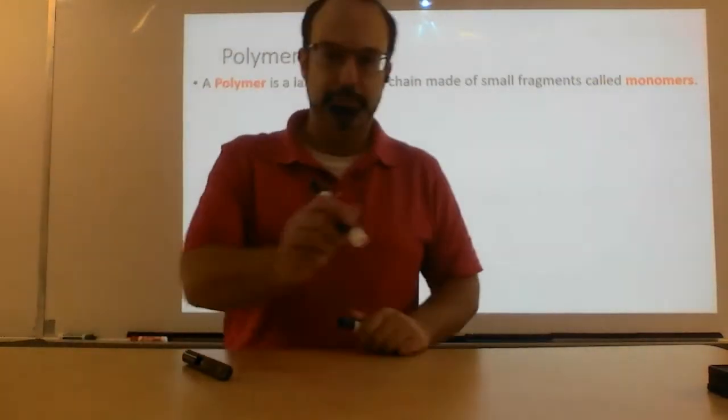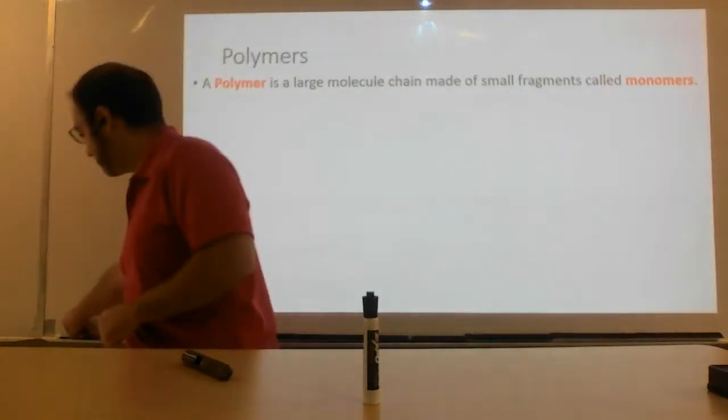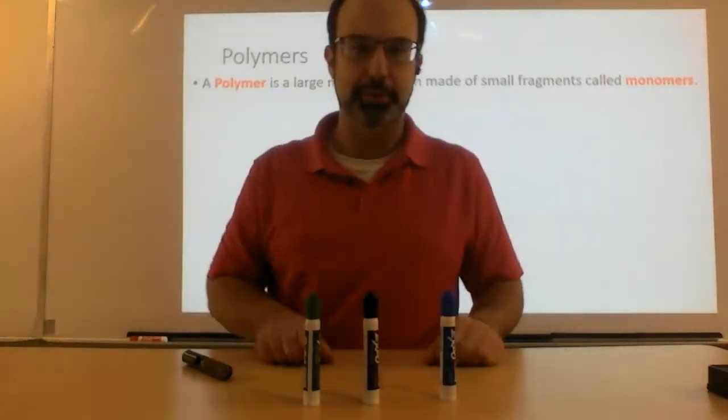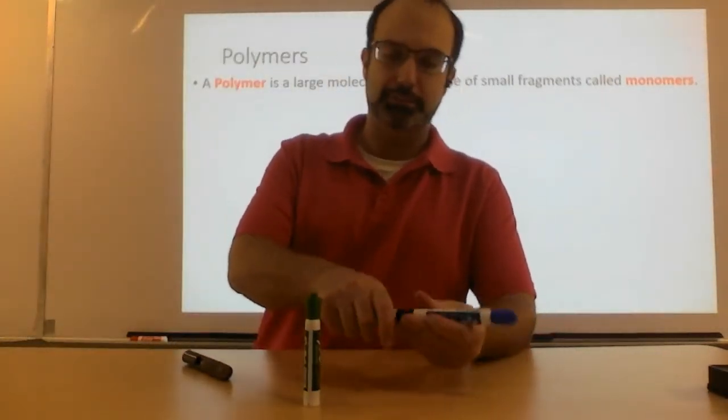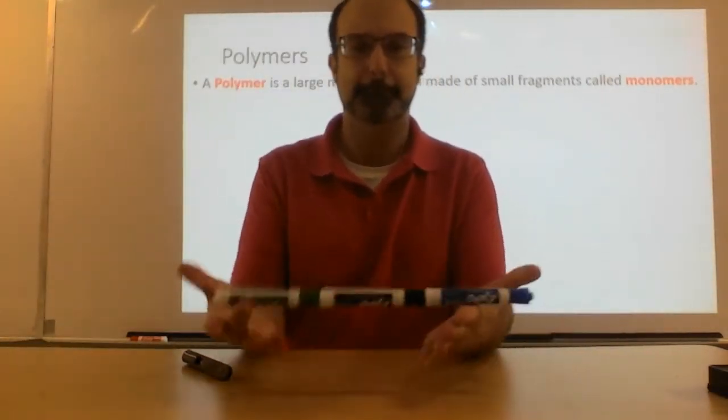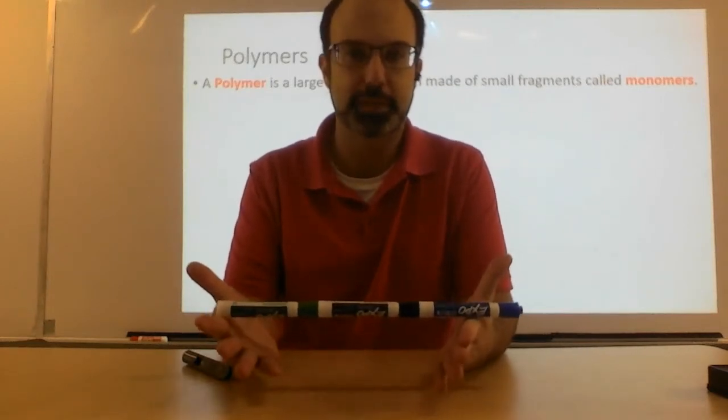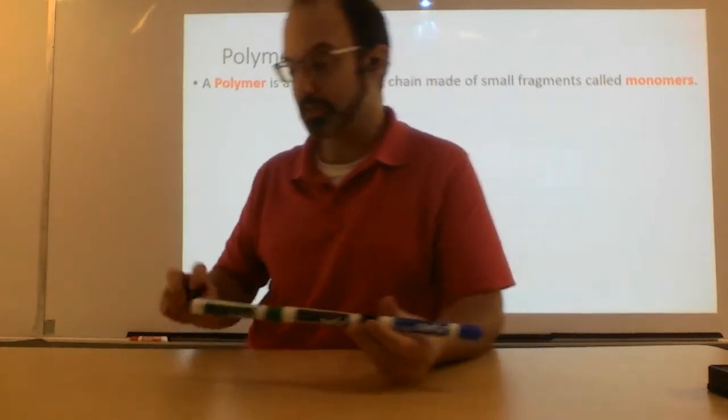If I take multiple of these things, I can put them together. Here is a monomer. Here are three monomers. And I take them and slot them together in order to make my polymer. Many. That's what poly means in this context.